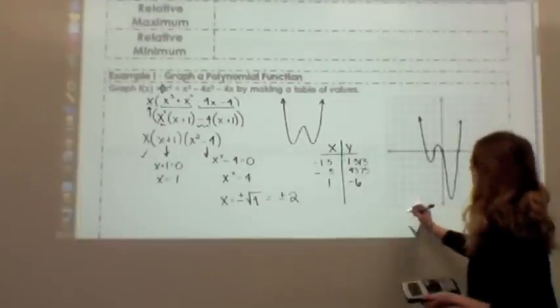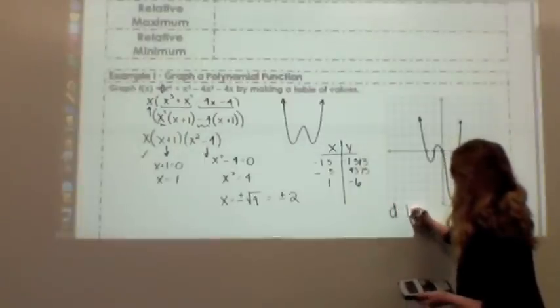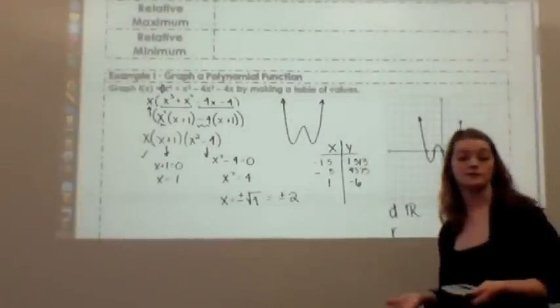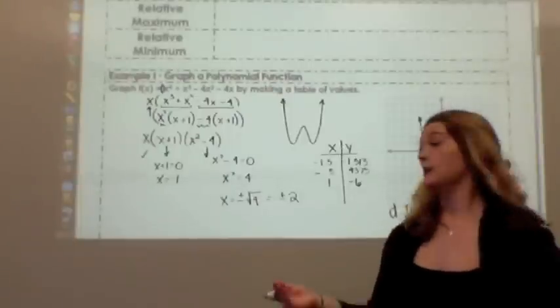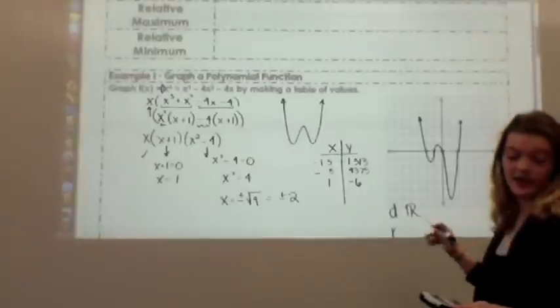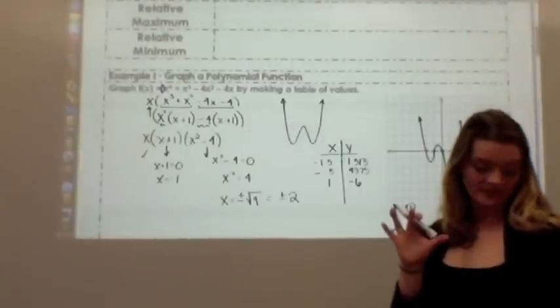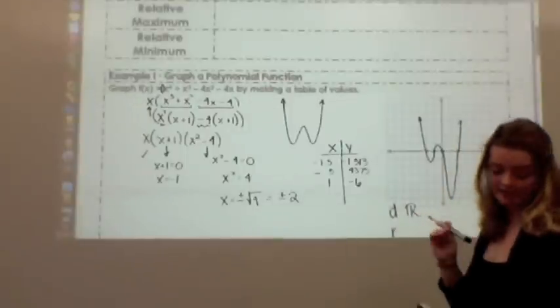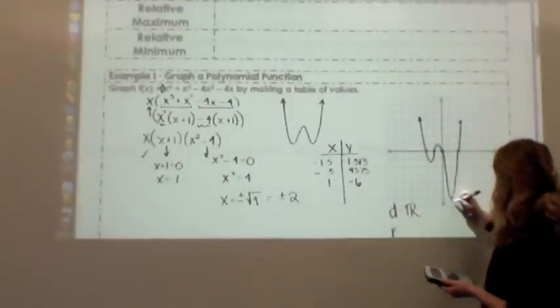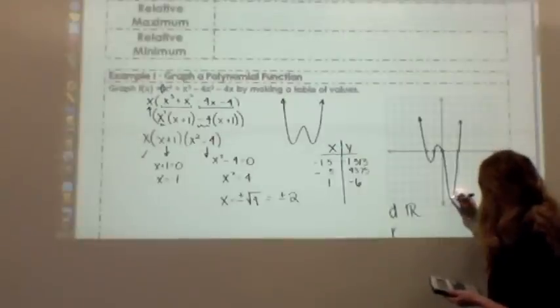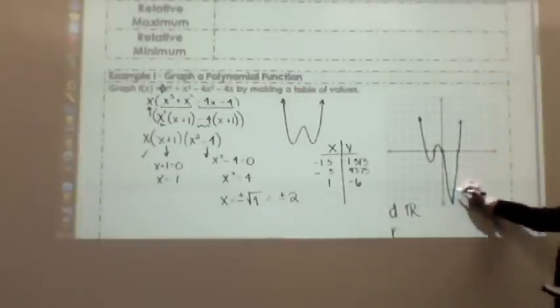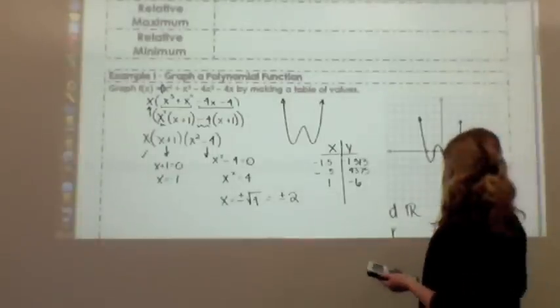The domain is all real numbers, so that's noted in your textbook. There's no single x value that you cannot plug in. Now the range. Notice that approximately my lowest value is negative 6. That's approximate. If you actually go into a little bit more detail, you're going to notice that you dip down a little bit further to approximately negative 6.6. And so that's located at 1.5.